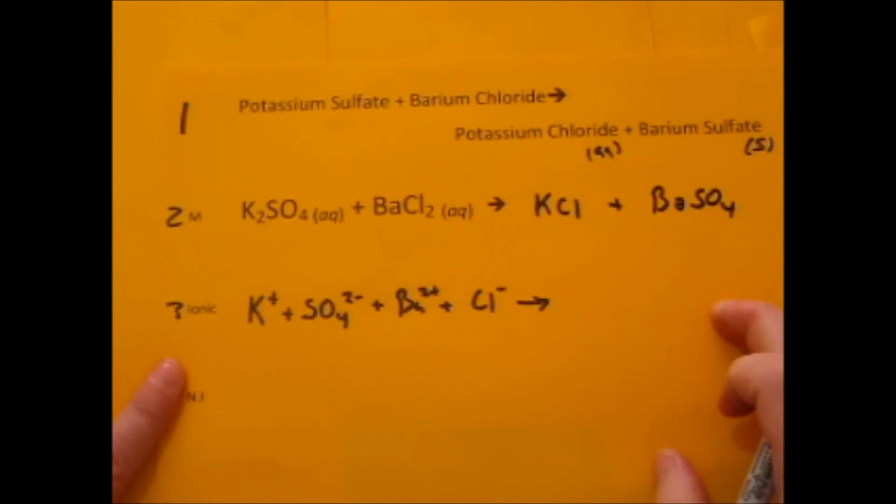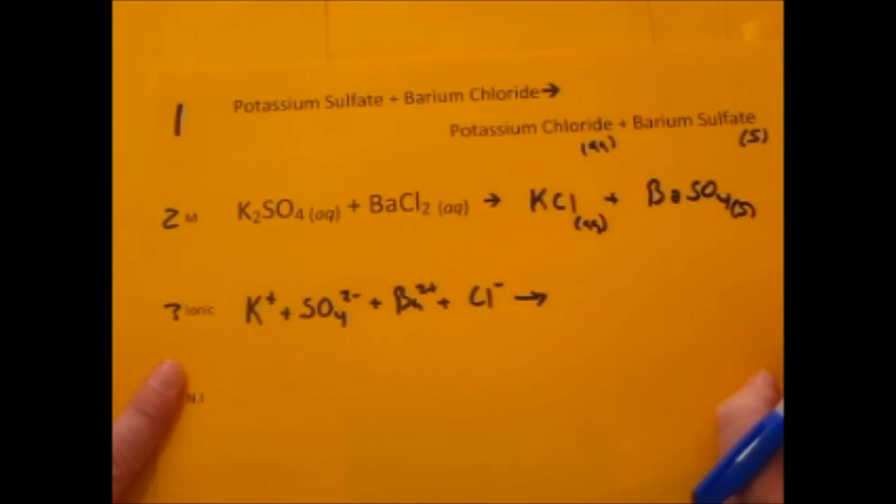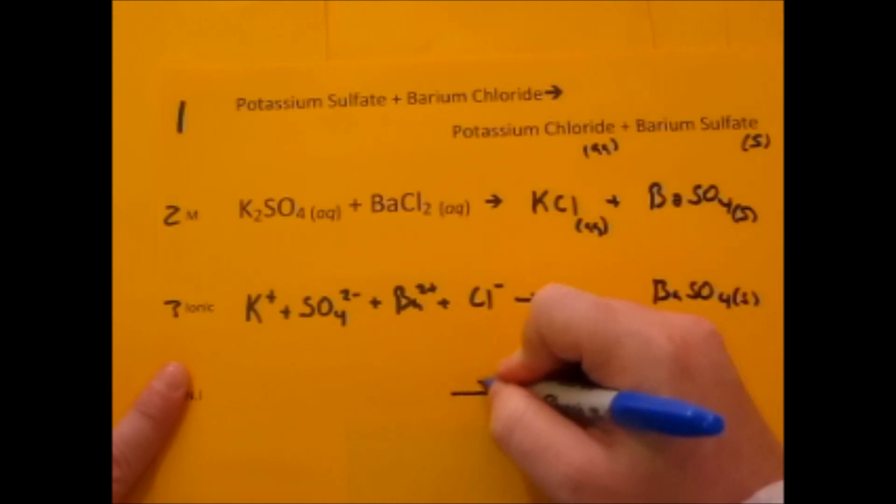Now you get to check your solubility rules. Since these were already told to us as aqueous and we've already done the solubilities of our two products, we don't have to go much further than that, we just bring them down. Now we're going to bring down our solids, so BaSO₄ solid gets to be brought down to not only the ionic but to the net ionic.